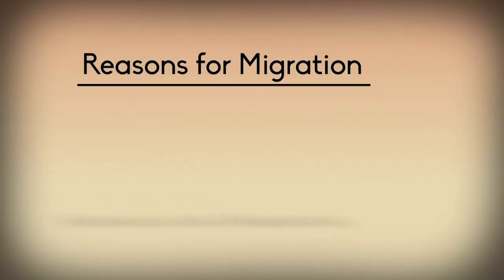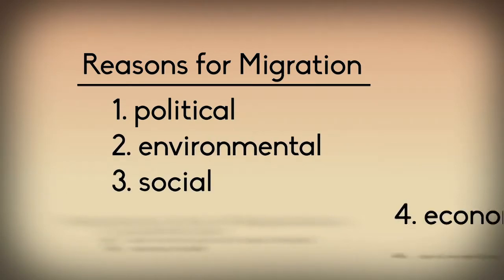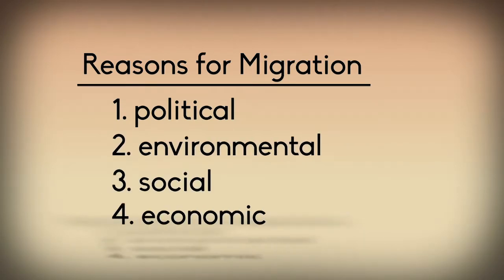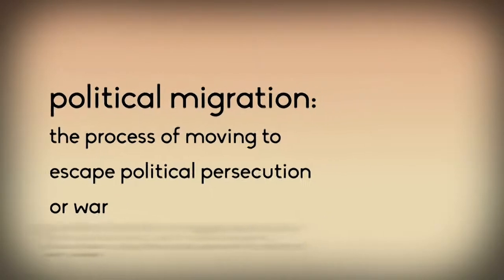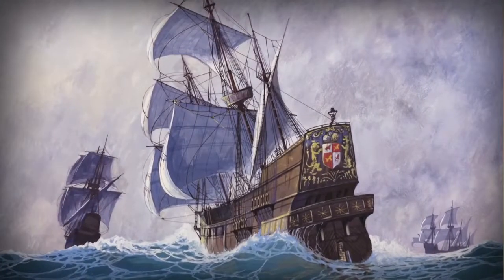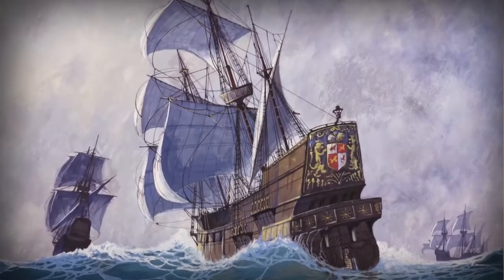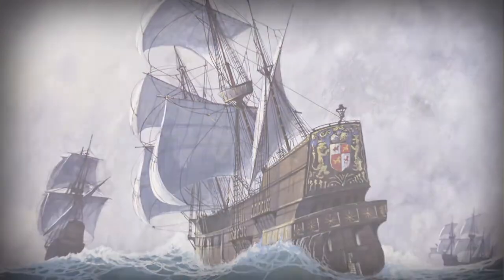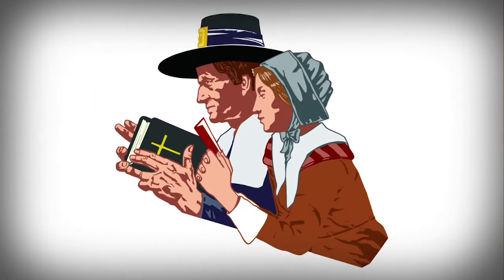There are four major reasons that people migrate – political, environmental, social, and economic. Political migration is moving to escape political persecution or war. This occurred during the colonization of America. Pilgrims came to America because they disagreed with the religious teachings of the Church of England. They wanted a safe place to practice a new religion.